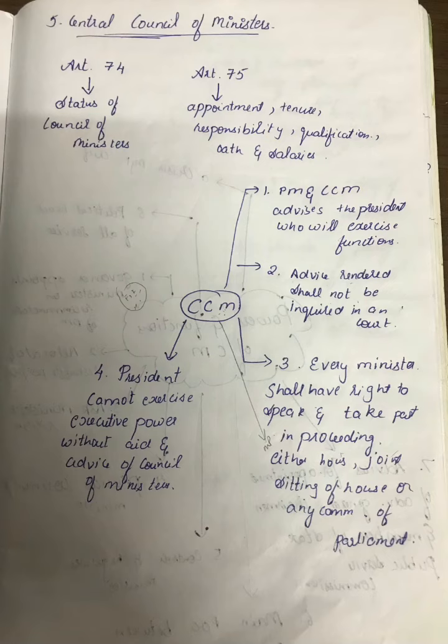Article 74 of the Constitution of India tells us about the status of council of ministers, and Article 75 speaks about the appointment, tenure, responsibility, qualifications, oath, and salaries in terms of council of ministers. I have made 4 points for you to understand, and you can write the same thing for your exams.